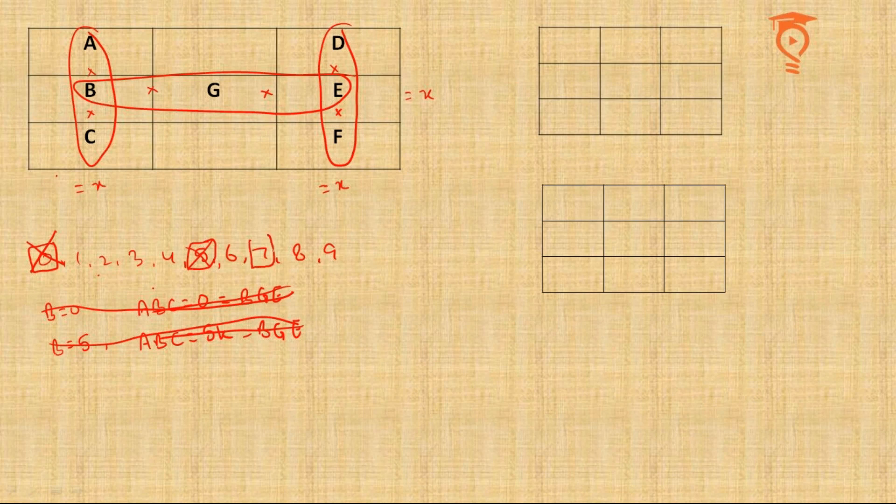With the same logic we can discard 7 also. 7 is also a prime number which cannot be made by any other prime number. So if 7 is one of the digits, the product will be bound to be a multiple of 7. Maximum two of the products will be multiples of 7, the third one will not be able to be that.